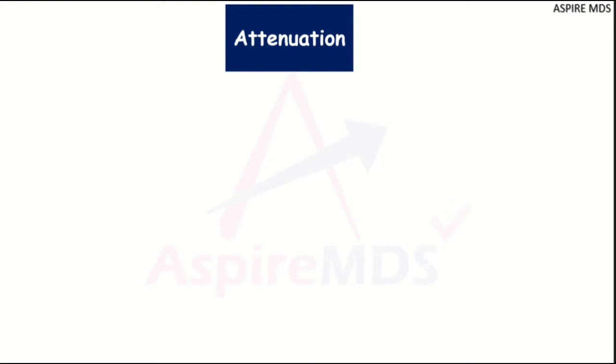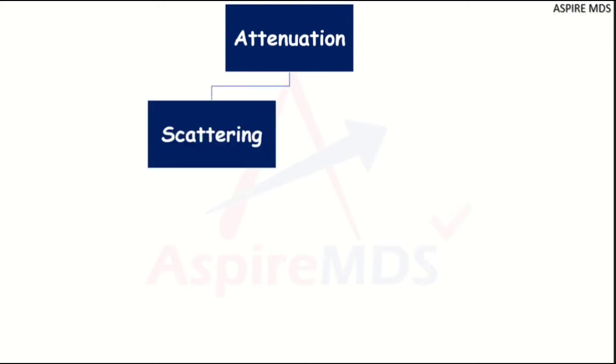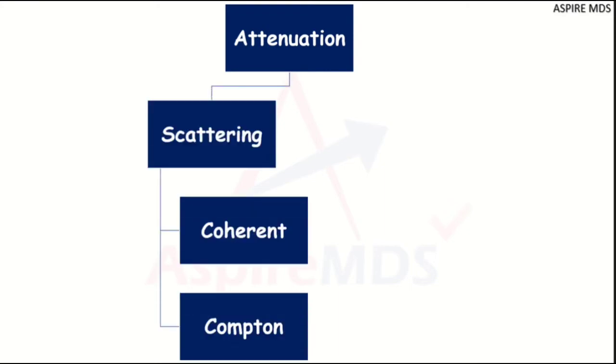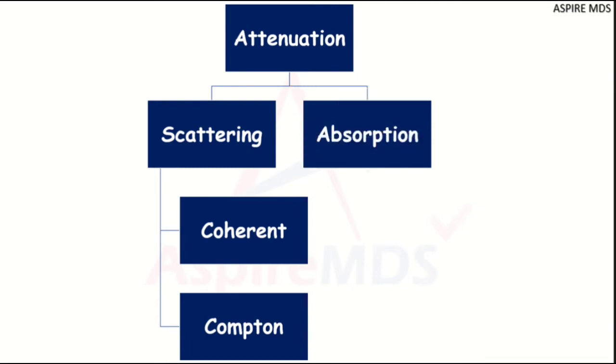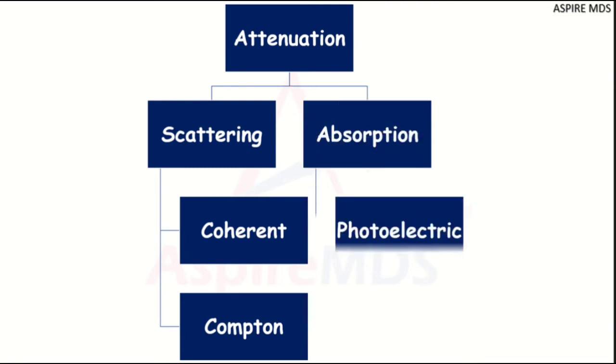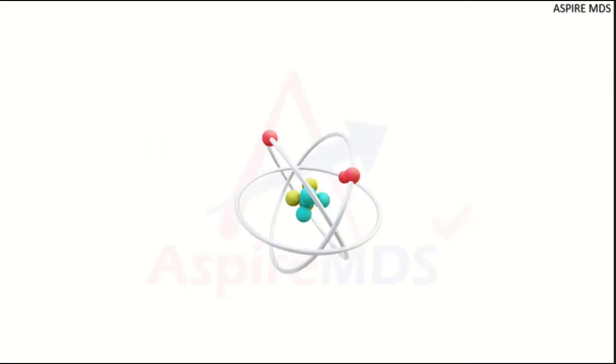So attenuation can be either through absorption or scattering interaction. When talking about scattering, it can be either due to coherent scattering or Compton scattering, whereas the absorption is photoelectric absorption. Let's look at each of these processes one by one.